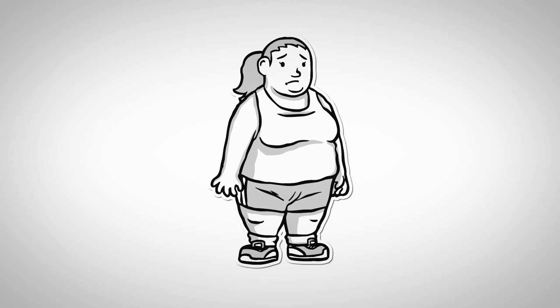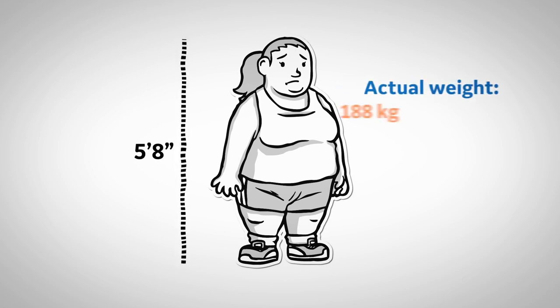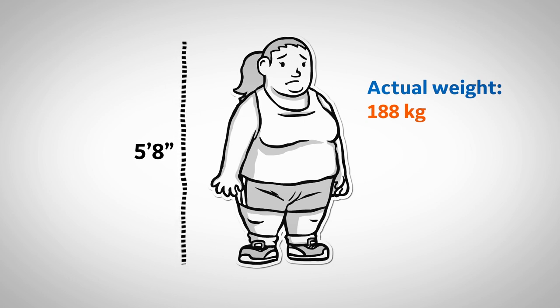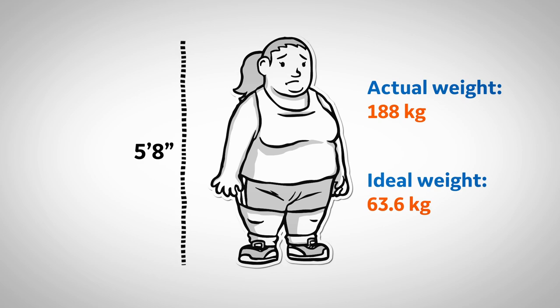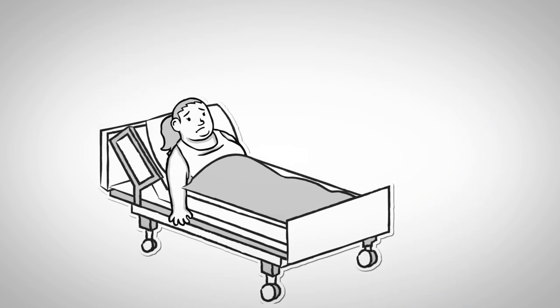Now let's take a look at the patient's nutrition parameters. Height is 5 foot 8 inches. Actual body weight is 188 kilograms, which translates into a BMI of 63, and ideal body weight at 63.6 kilograms. This patient was diagnosed with necrotizing fasciitis.